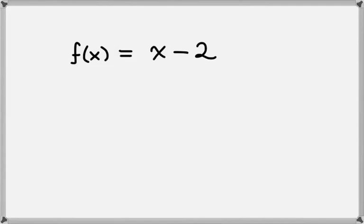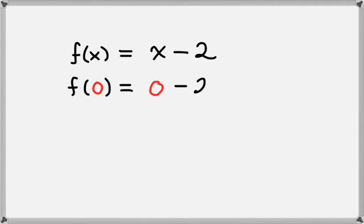Let's take for a first example f of x equals x minus 2, and we're going to evaluate this function at 0. f of 0 equals — let's plug in 0 for x — so we get 0 minus 2, and of course 0 minus 2 is just negative 2. So f of 0 equals negative 2.